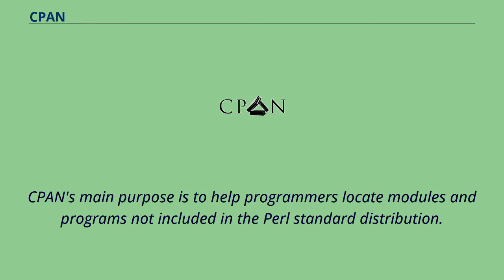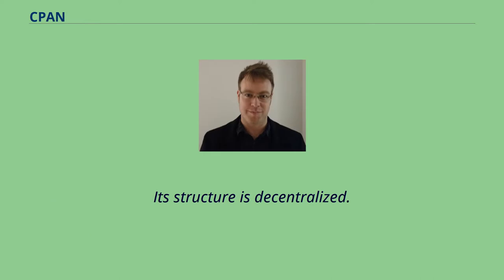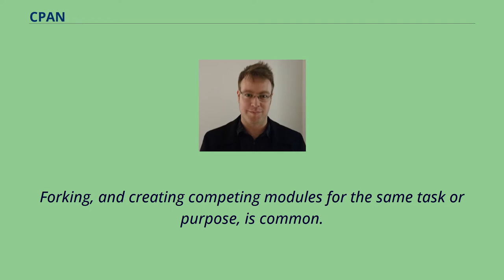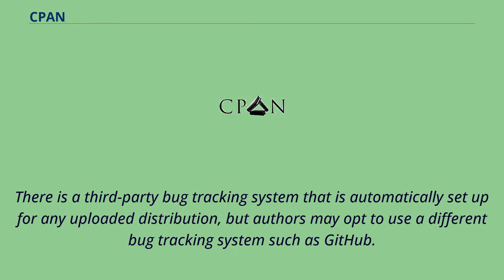CPAN's structure is decentralized. Authors maintain and improve their own modules. Forking and creating competing modules for the same task or purpose is common. There is a third-party bug tracking system that is automatically set up for any uploaded distribution, but authors may opt to use a different bug tracking system such as GitHub.